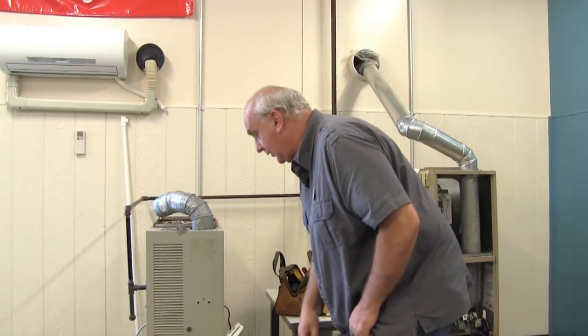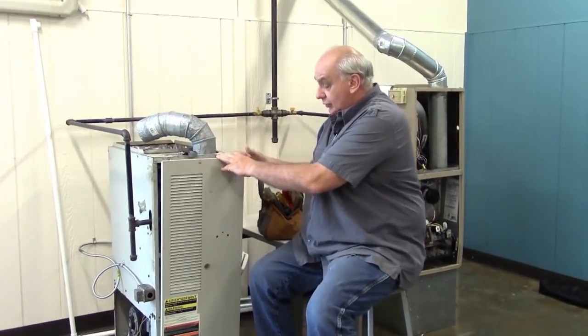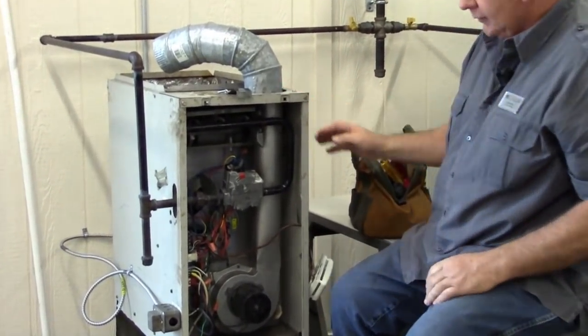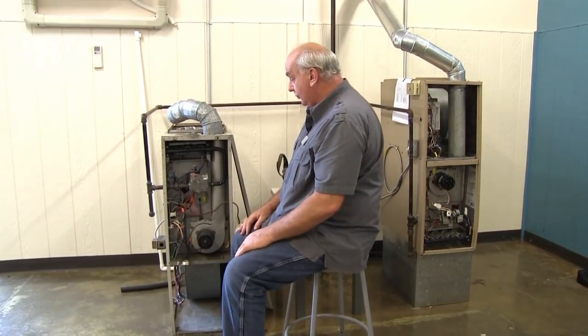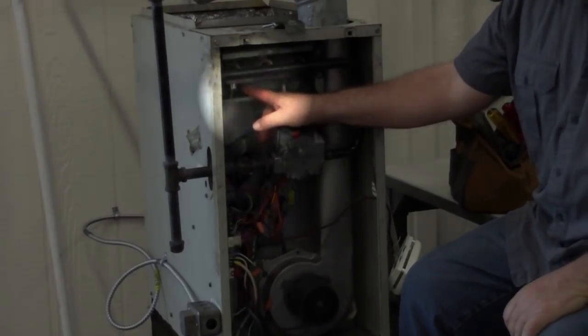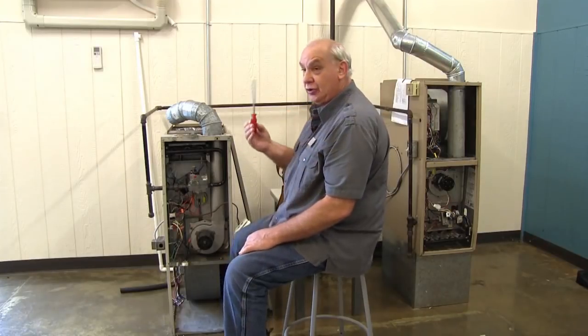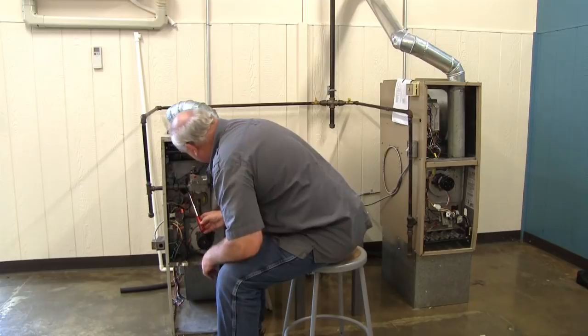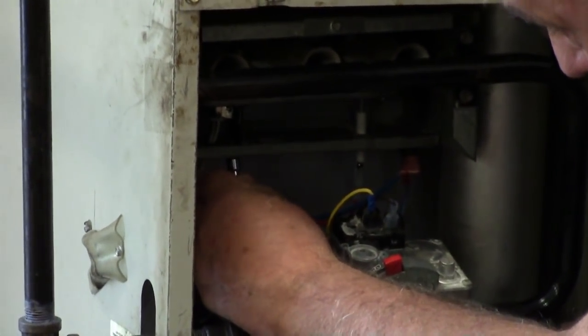This is a Nordine furnace and we'll take the door off. We will turn the power off to make it safe for us to work in here. The igniter is mounted right up here, and so once again all we need is our quarter inch nut driver. We'll reach up in here and unscrew this quarter inch screw.